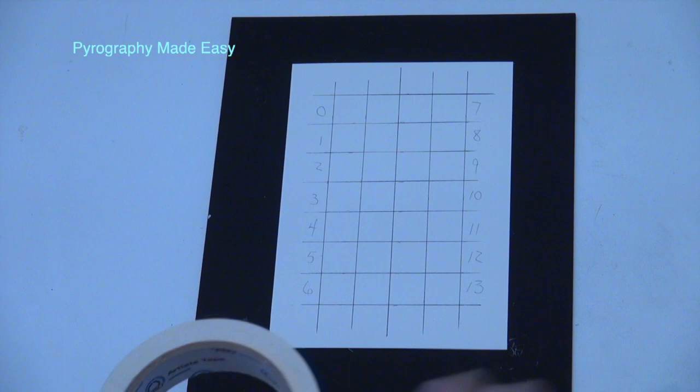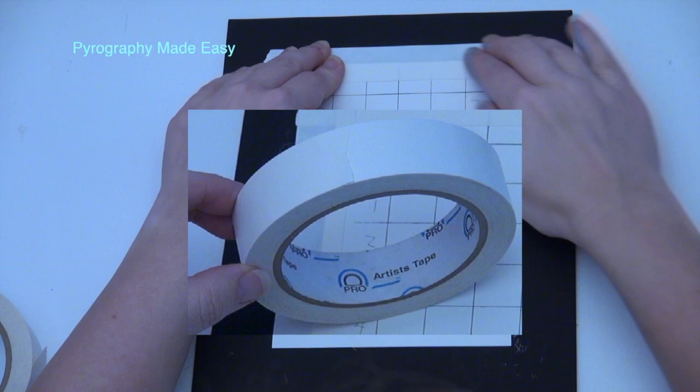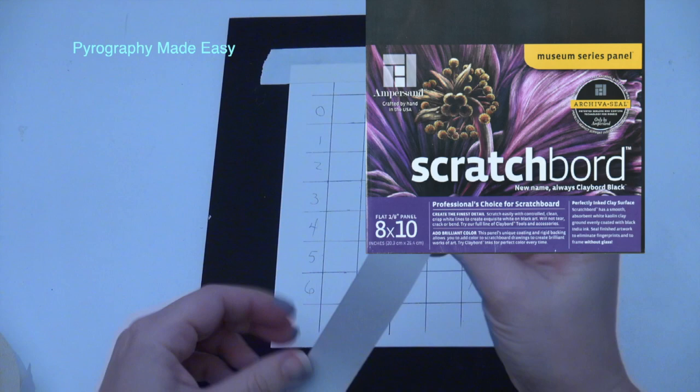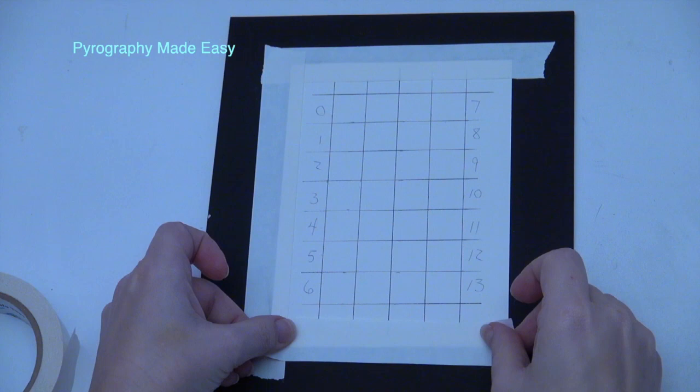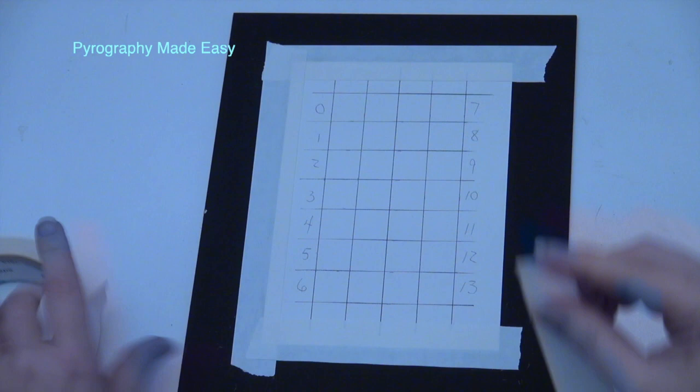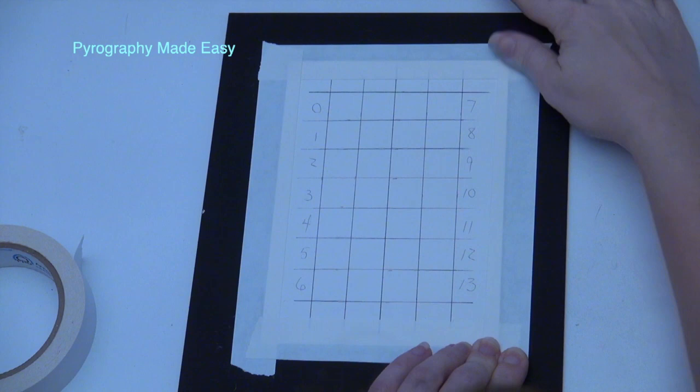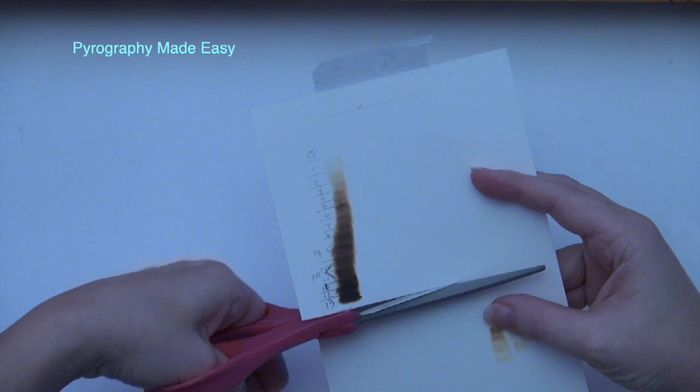Secure the paper to a backer board. I am using artist white tape but for this any tape will work. The backer board I'm using is a scratch board by ampersand. I'll put a link to both items in the description below. But keep in mind you can also use thick cardboard or plywood. You do need a backer board as this will prevent the paper from warping and prevent heat transfer during the darker burns. Paper isn't very thick so anything that's underneath it when you're burning darker can turn brown.